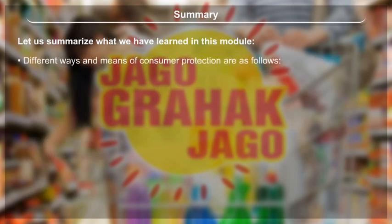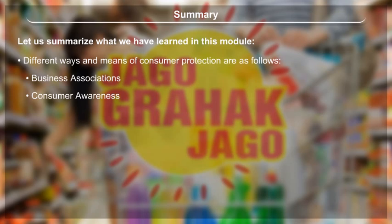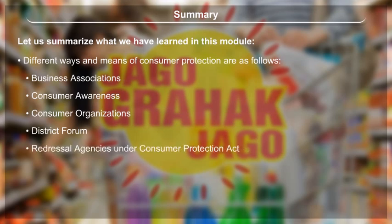Different ways and means of consumer protection are as follows: Business Associations, Consumer Awareness, Consumer Organizations, and Redressal Agencies under the Consumer Protection Act including the District Forum, State Commission and National Commission.